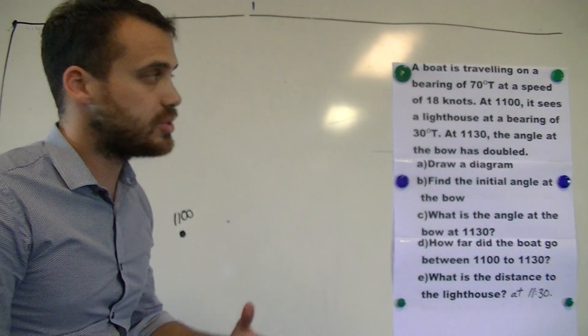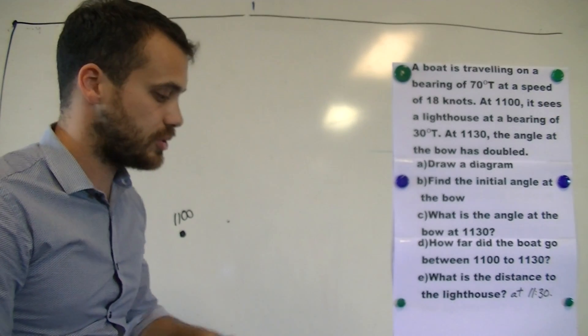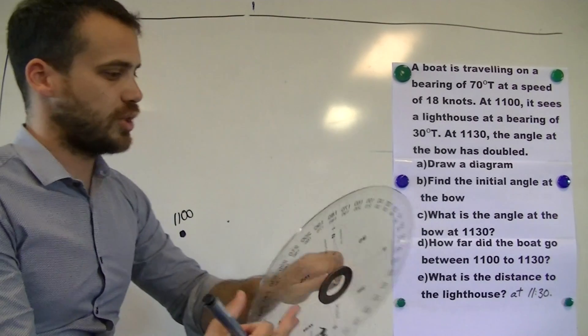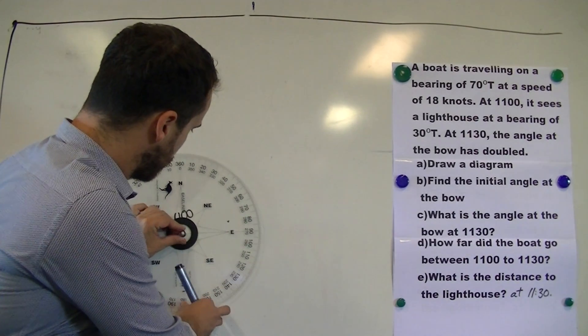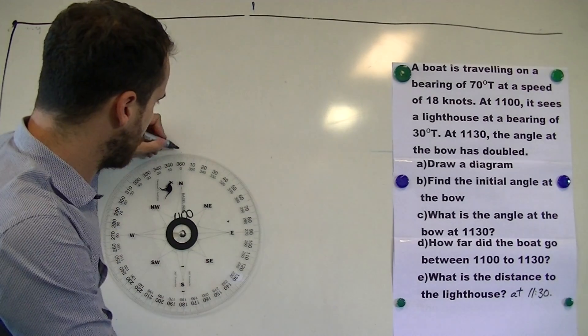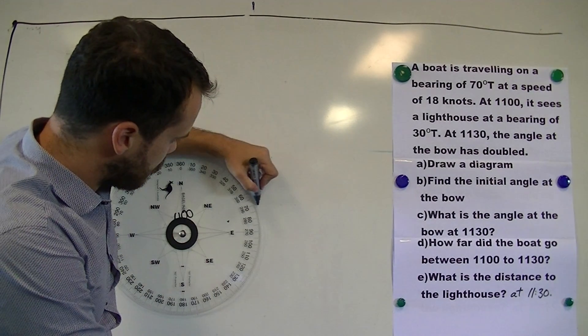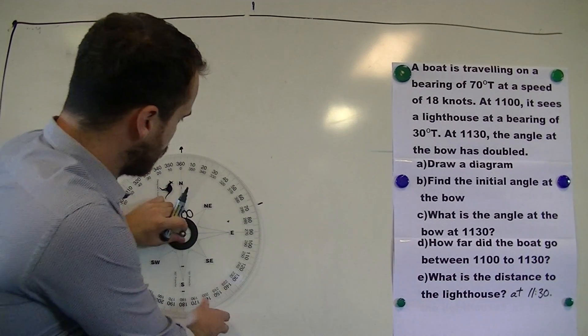There's my boat at 11 o'clock. Now my boat needs to travel on a bearing of 70 degrees true. It's a good idea to have a protractor. I'm going to use this one here. Now there's my north line up here. 70 degrees true.